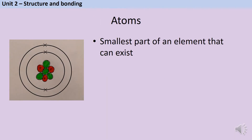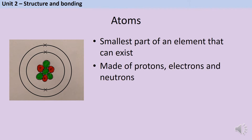Atoms are the smallest part of an element that can exist. They're made up of three types of subatomic particle: positive protons, negative electrons, and neutral neutrons. As you can see from this picture of a lithium atom, there are three positive protons shown by the red circles, three negative electrons shown by the crosses, and three neutral neutrons shown by the green circles.